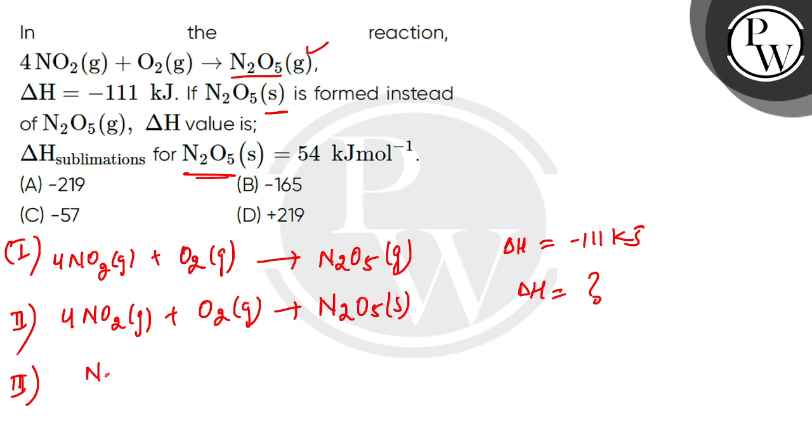That means that your N2O5 solid will be converted into N2O5 gas. So the delta H value given is 54 kilojoule per mole.